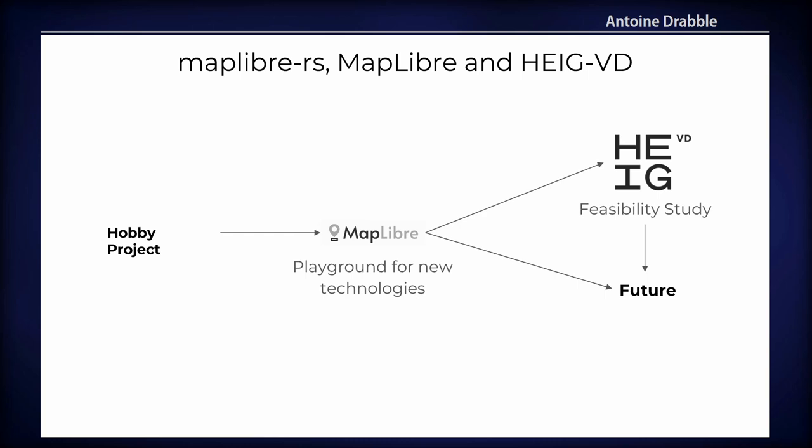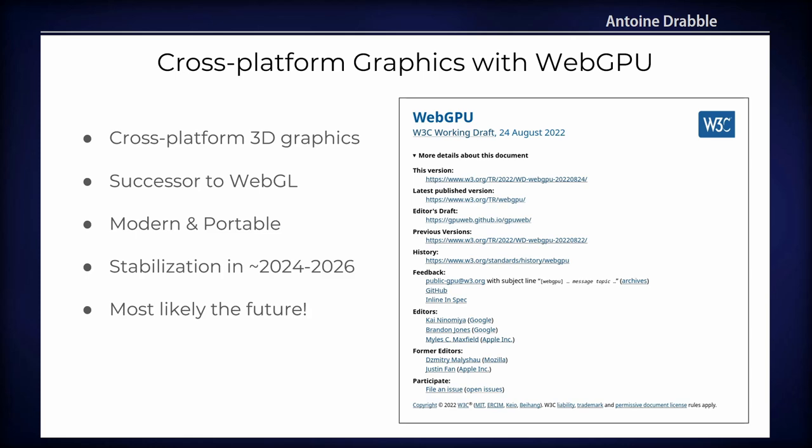That led to a collaboration where we joined forces with HEIG-VD and made this feasibility study and review. The future is still unclear, which I'll address later. All of this is made possible by WebGPU, an upcoming W3C draft specification. It's a cross-platform 3D graphics API usable in a browser, and also on native desktop or mobile via a corresponding implementation. It's the successor to WebGL — modern and portable — and we expect it to stabilize roughly between 2024 and 2026, though it could take longer or potentially not happen.